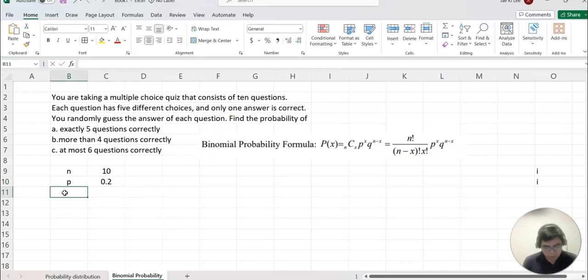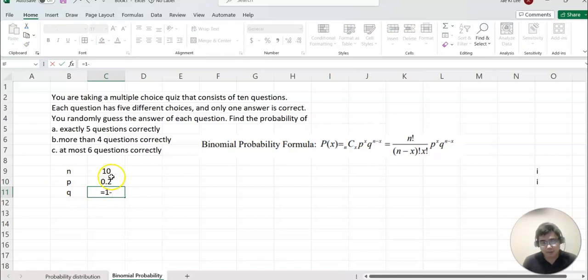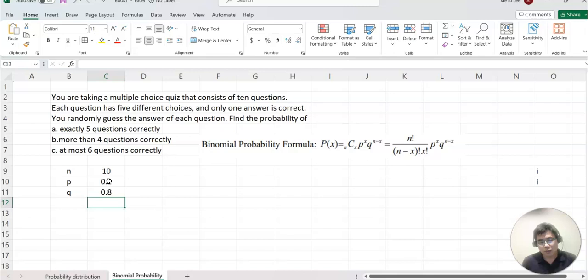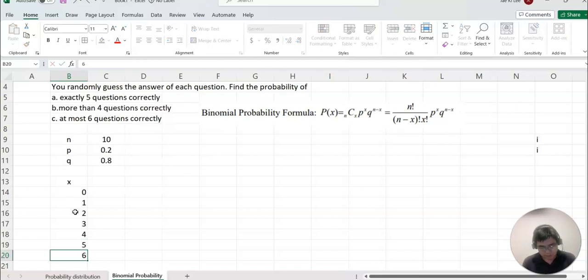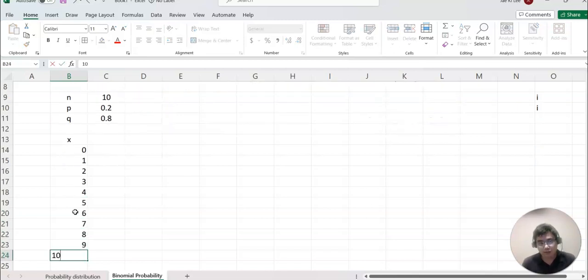Now q representing counterpart probability will be one minus p value, so one minus p value gives us 0.8. The combination between probability and the counterpart probability must be equal to one. Then case x can be no question correctly or one is correctly up to ten, so I can make zero, one, two, three, four, five, six, seven, eight, nine, ten.